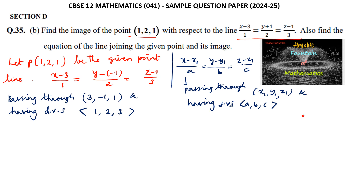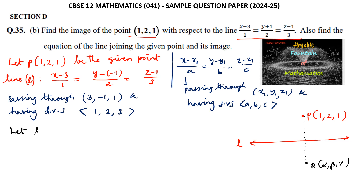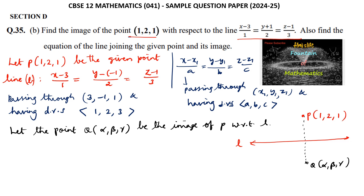We have point P (1, 2, 1) and the line equation. We need to find the image of point P with respect to this line. Let Q(α, β, γ) be the image of point P with respect to the given line L, and let M be the midpoint of P and Q which lies on L.